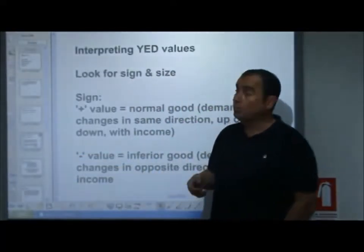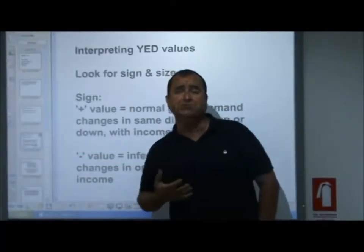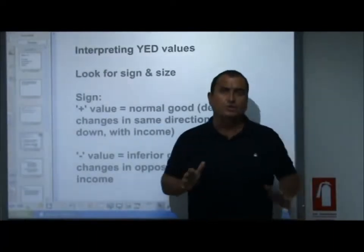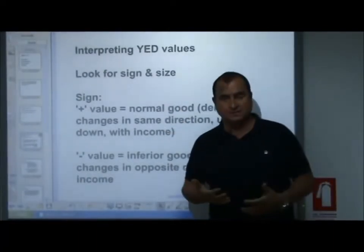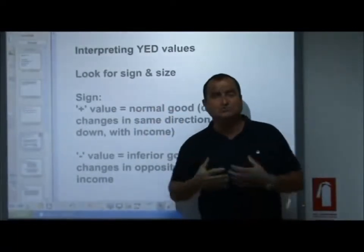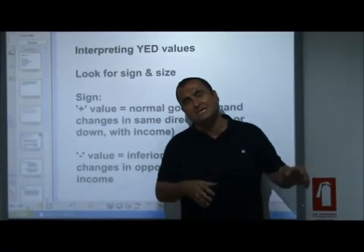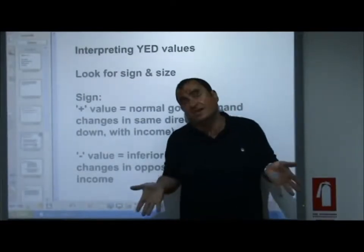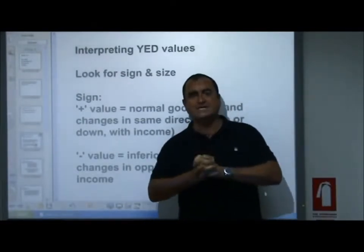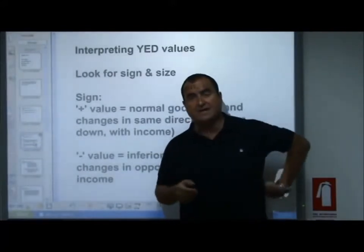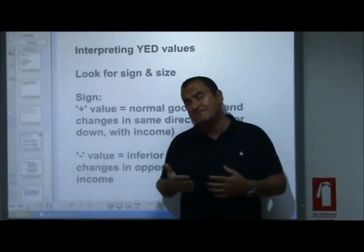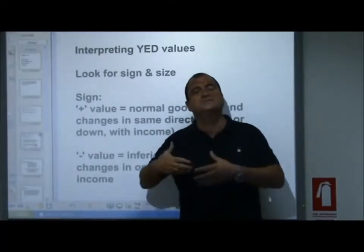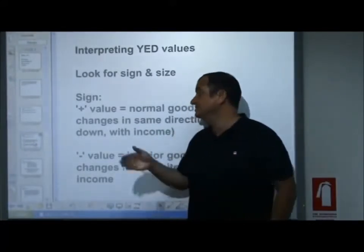When you've got your answer, you need to be able to interpret it. There are two things you must do: look at the sign — plus or minus — and the size. The sign is really, really important. In PED it always came out as negative, and we could sometimes ignore that, but no longer. Here in YED you have to look at the sign very carefully, and when calculating, be very careful to give a negative to anything that falls — if income levels fall or if quantity demanded falls.